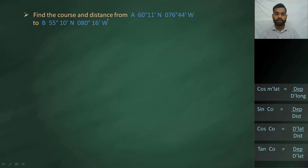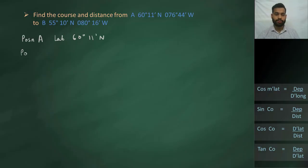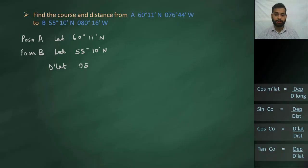Let us read this question: find the course and distance from position A to position B. The initial and final positions are given, and what they are asking is the course and the distance. First we will find the DLAT. As both points are in the same hemisphere and we are traveling from a greater north latitude to a lesser north latitude, we are traveling south. So DLAT will be 5 degrees 1 minute south, which converts to 301 minutes south.